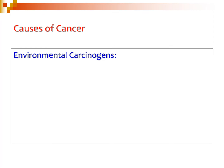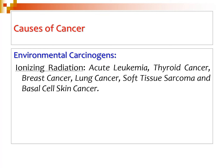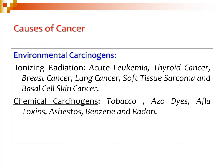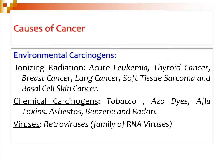As far as the causes of cancer are concerned, the most important are environmental carcinogens. The first is ionizing radiation, which may result in a variety of cancers including acute leukemia, thyroid cancer, breast cancer, lung cancer, and soft tissue or basal skin cancers. Chemical carcinogens like tobacco, azodyes, asbestos, benzene, and radon may also cause various cancers. Some viruses, particularly retroviruses — members of the RNA virus family — may also induce a variety of cancers.